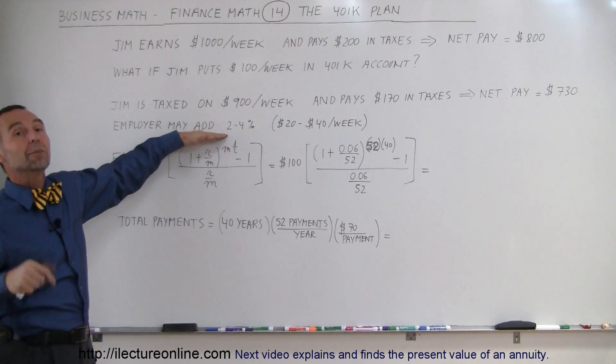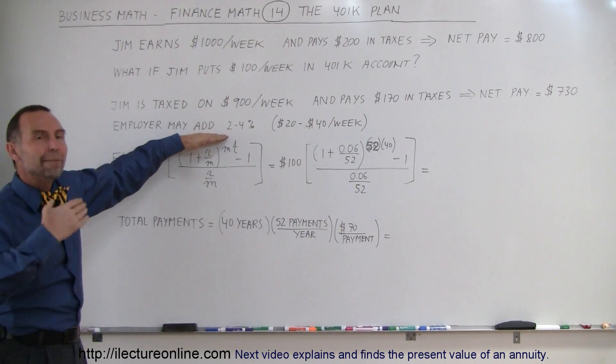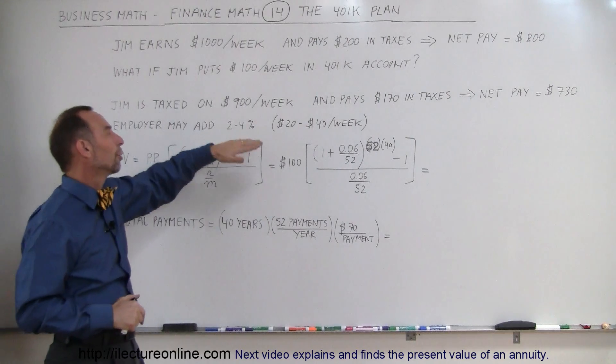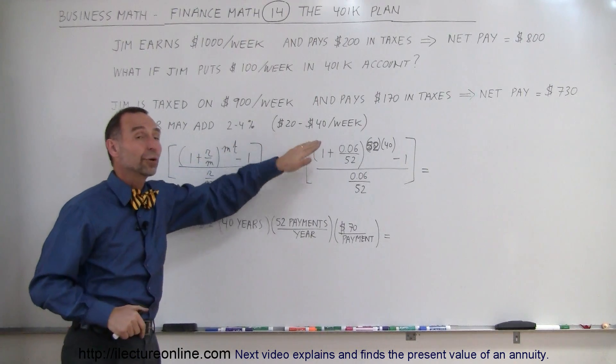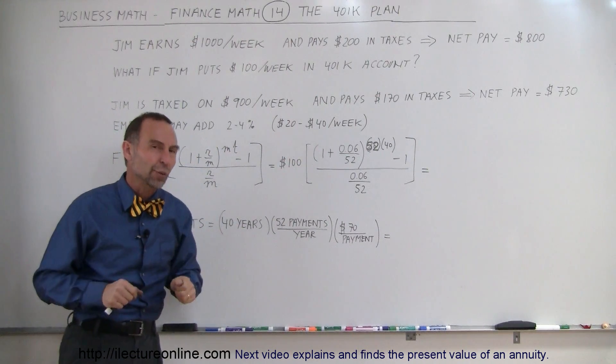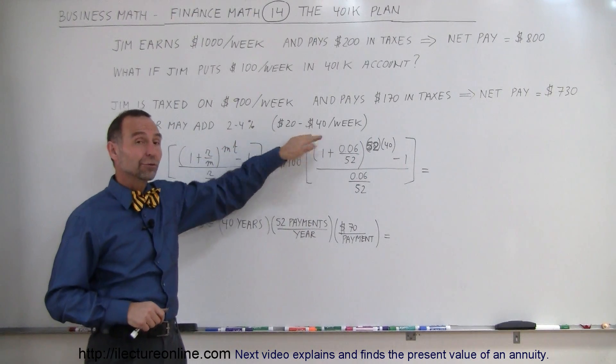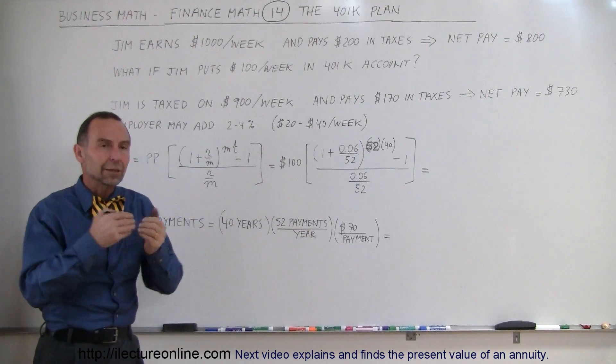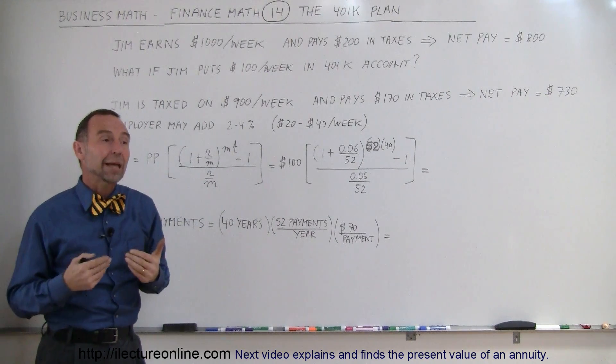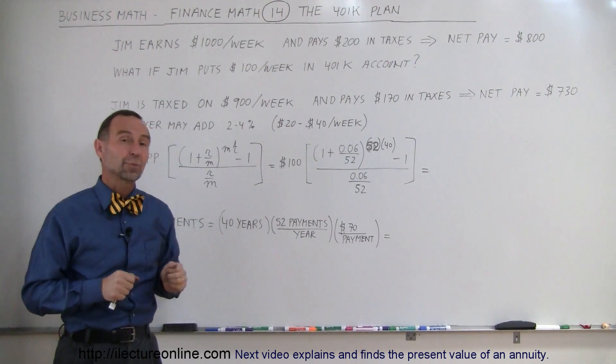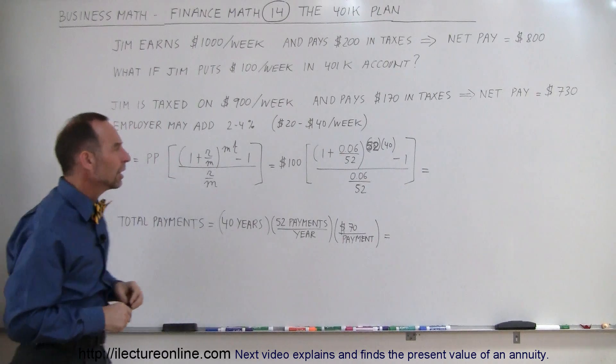Sometimes the employer will also add some money to your 401k plan. It's called a matching plan. It may be as much as 2 to 4% which is another $20 or $40 per week maybe put into your 401k savings plan. If it's 4% and the employer gives you another $40 per week, then by only losing $70 per week in net pay, you could be saving $140 per week tax-free. That's a pretty good deal.